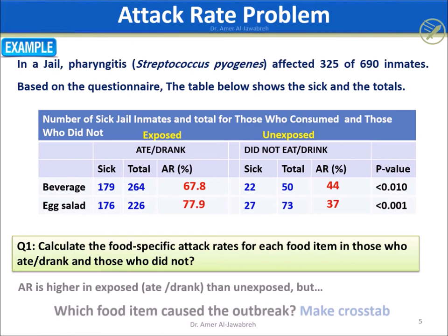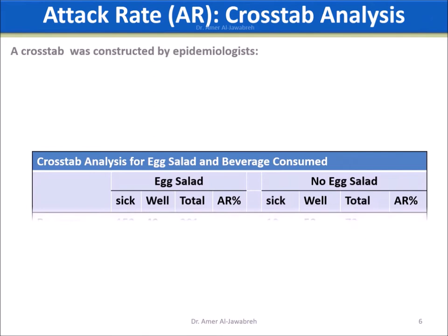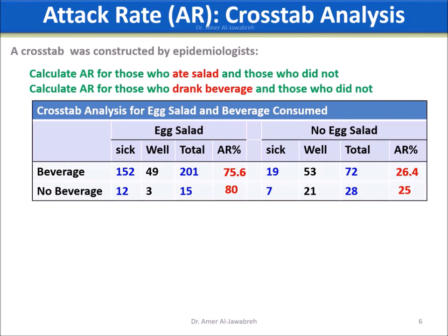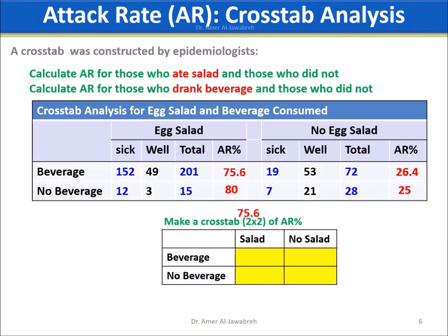Therefore, a cross-tabulation is needed. The table provided shows egg salad by beverage. We calculate the percent AR for each cell and place the results into a 2x2 cross-tab table.